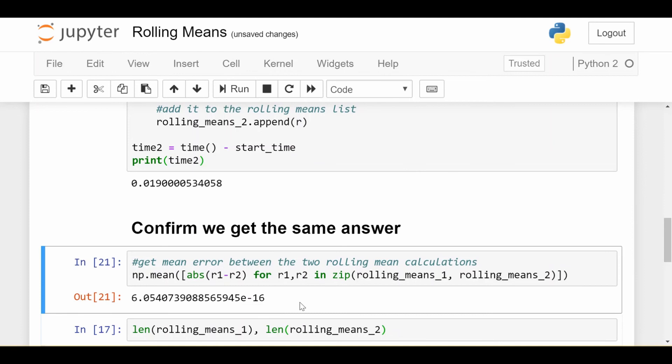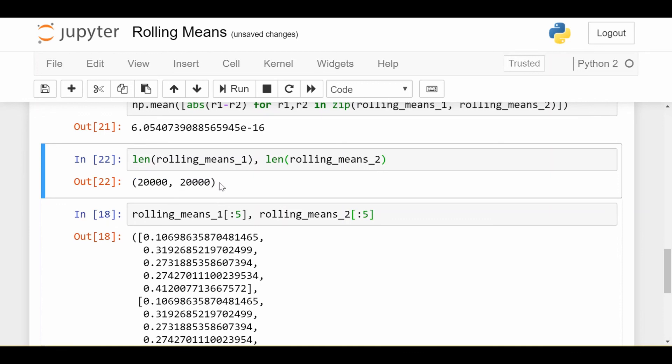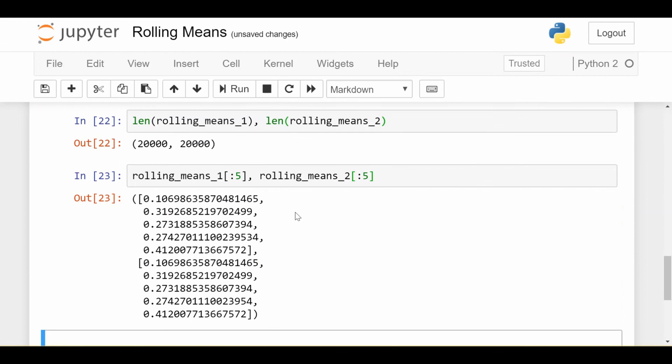You might be wondering, why is it not zero? Well, because of how the computer computes means sometimes, because we computed it in two different ways, it's going to be a little bit different numerically, but we see that little bit is not significant at all. Let's also make sure the two means are the same length. So the two rolling means are 20,000, which makes sense because our initial list was 20,000. And let's print out the first five elements of each to do a last sanity check. We see that these rolling means do match up to each other. So we're confident that we got the same answer.